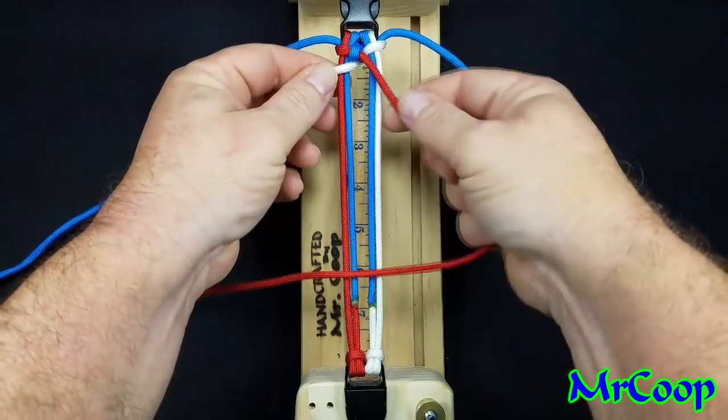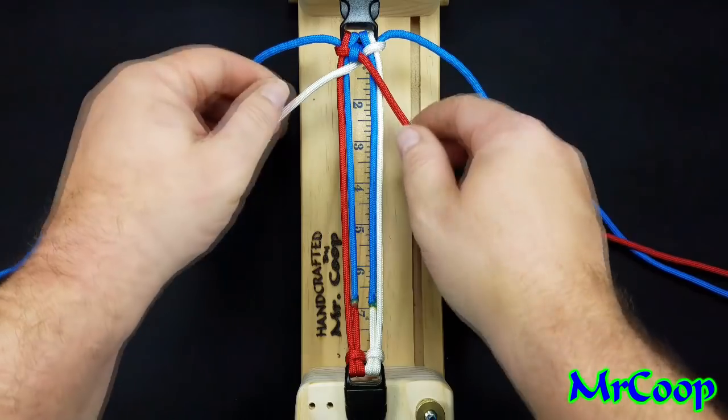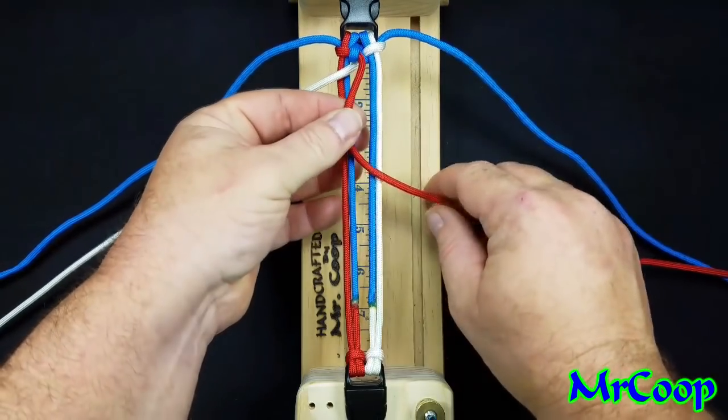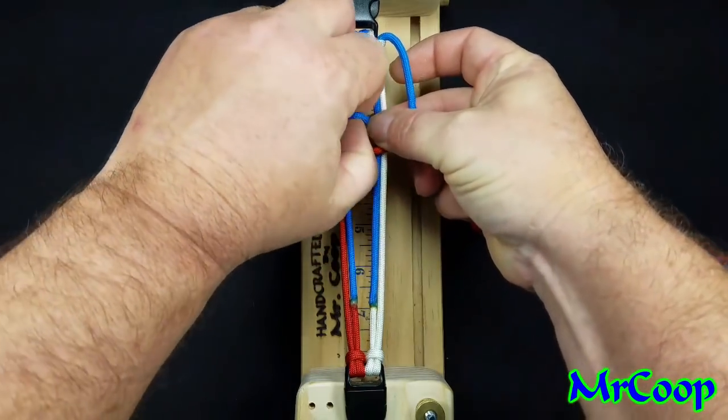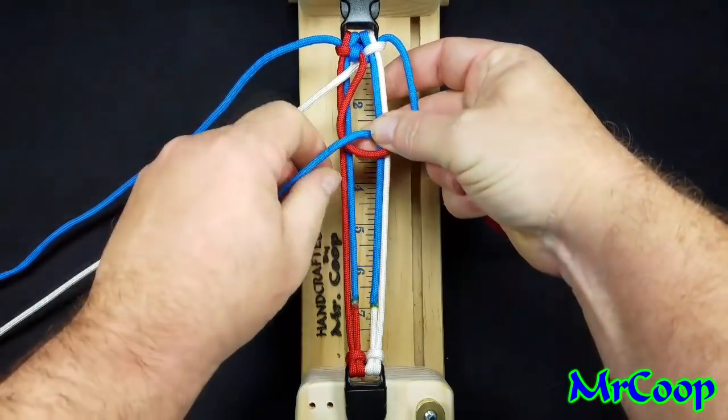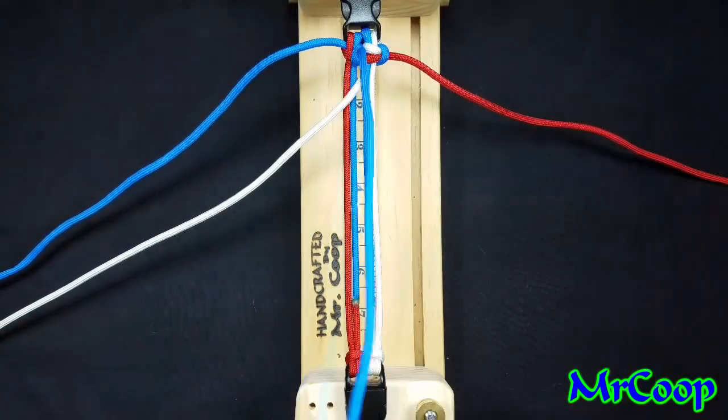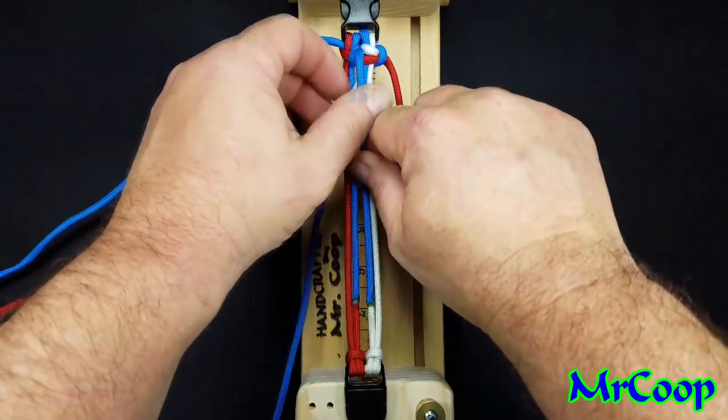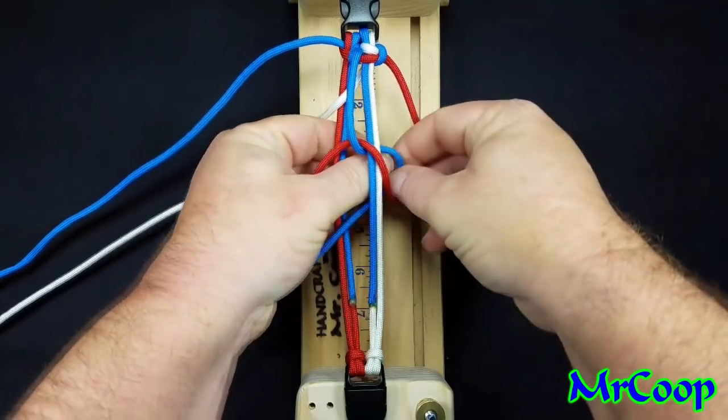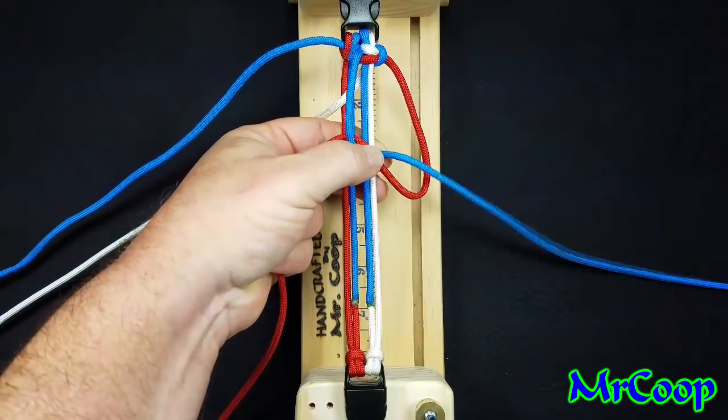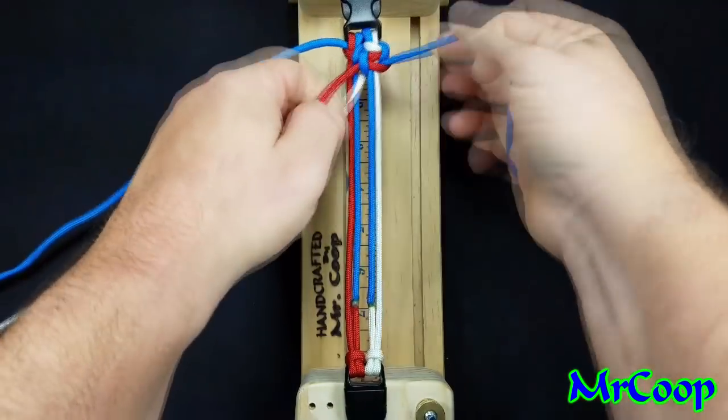First weave, we're going to put the red over, and the white going to go over as well. Just like before, we're going to lead with the red, take the blue over the red, under the core, through the hole. Red over the core, blue under, through the middle, out the other side. That completes your first knot on that side.